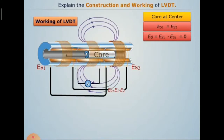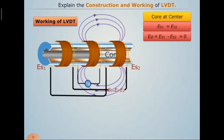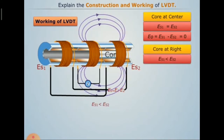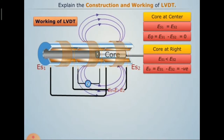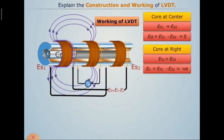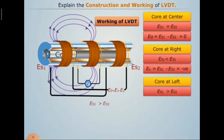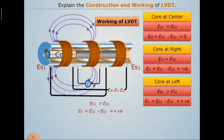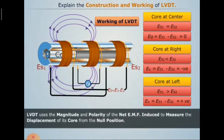When the core moves towards the right side, the maximum magnetic flux links with secondary coil 2, so ES2 is greater than ES1, and therefore the output voltage E0 is negative. When the core is at the left-hand side near secondary coil 1, ES1 is greater than ES2, and therefore the output voltage is positive. Like this, differential voltage is produced, and displacement is converted into output voltage using the magnitude of the net EMF induced to measure the displacement of the core from the null position.